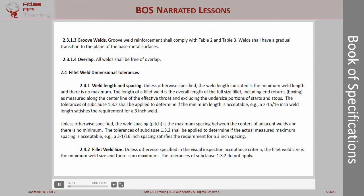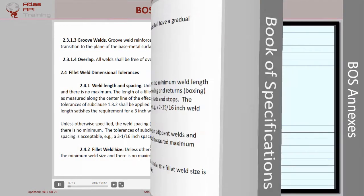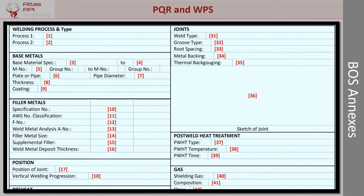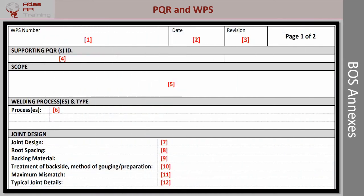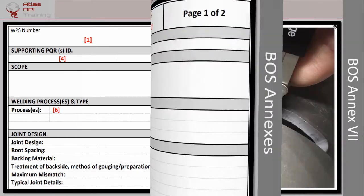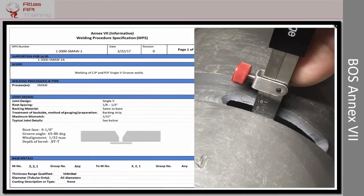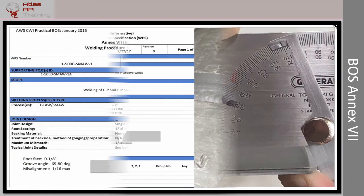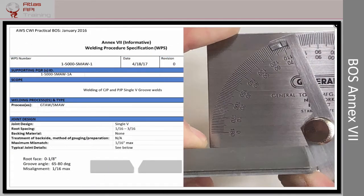This is a typical page out of the book of specifications that we'll review for you in the narrated lesson. Annexes 7 and 8 in the book of specifications contain two important pieces of documentation: the PQRs and the WPSs. We have one dedicated narrated lesson that will discuss the use of both of these two forms, as well as several quiz questions that will show you the proper use of these two forms.